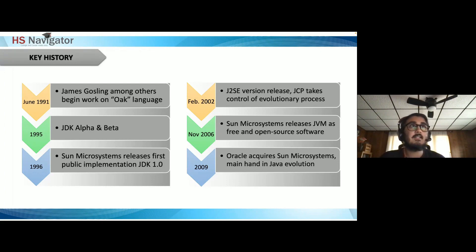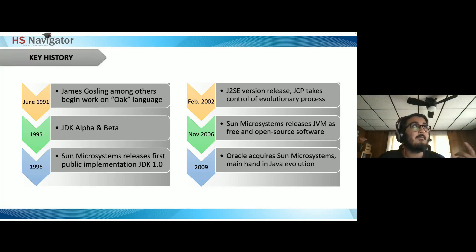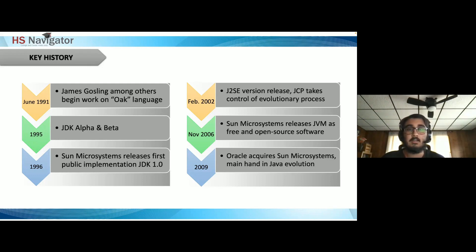In 1996, Sun Microsystems released the first public implementation of Java Development Kit 1.0. Then in 2002 with J2SE, the Java Community Process took control of how Java evolves. The Java Community Process was created in 1998 to allow parties to develop standard technical specifications for Java technology, using Java Specification Requests — formal documents — to govern the technology.